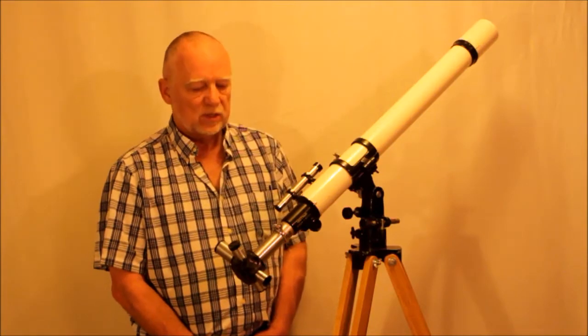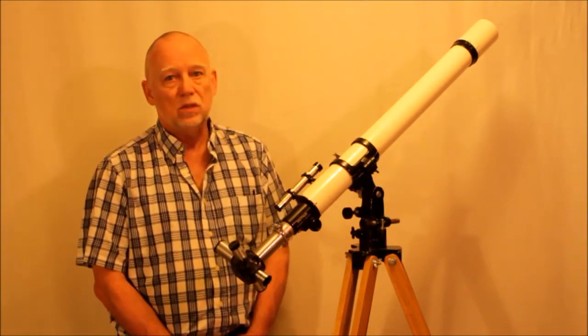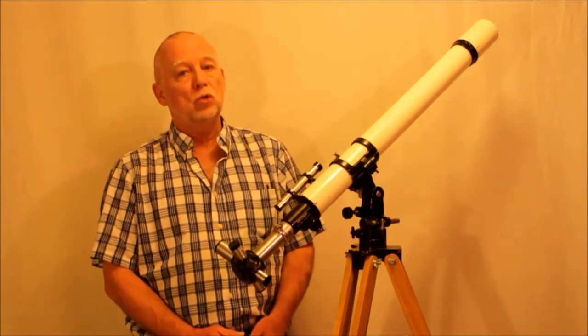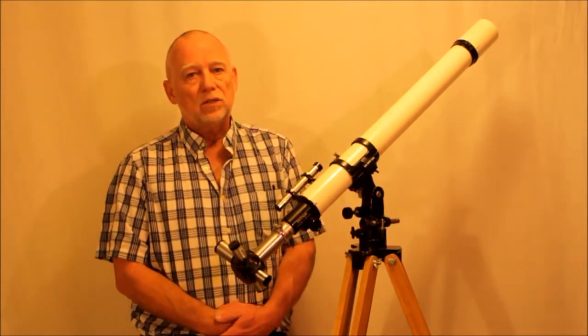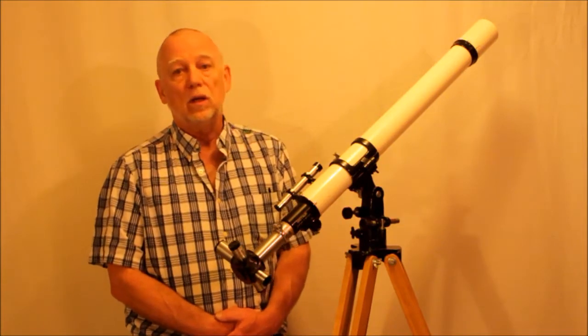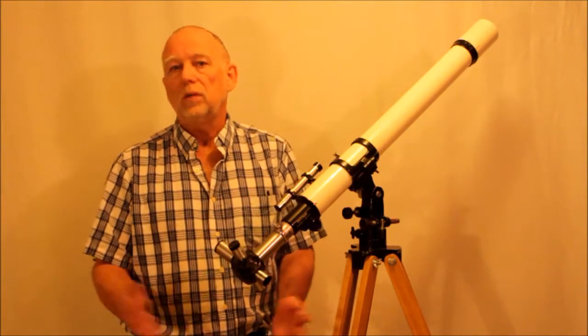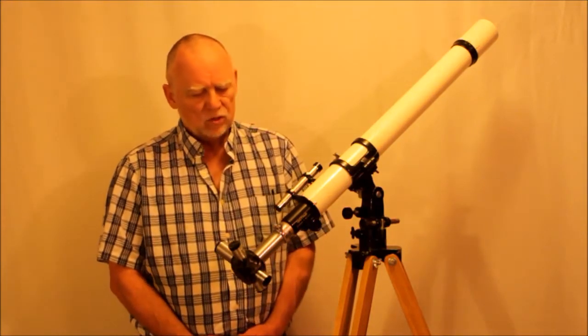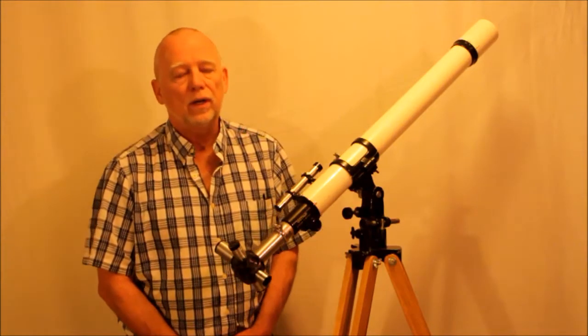This is a 60 millimeter Unitron telescope. If there was any such thing as a commonplace Unitron, this would be the commonplace Unitron. 60 millimeter Unitrons appear on eBay perhaps two a month or one a month, something like that. So they're fairly commonplace. Some of the other scopes appear never or very rarely.